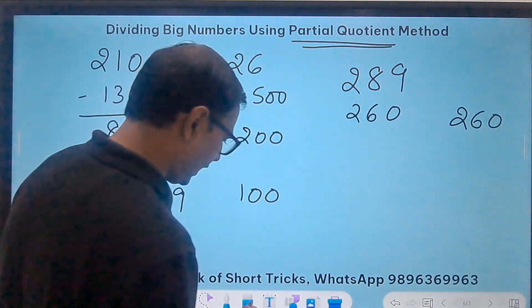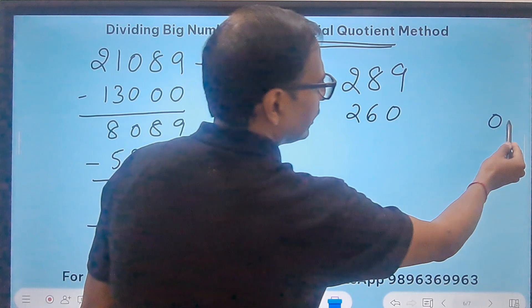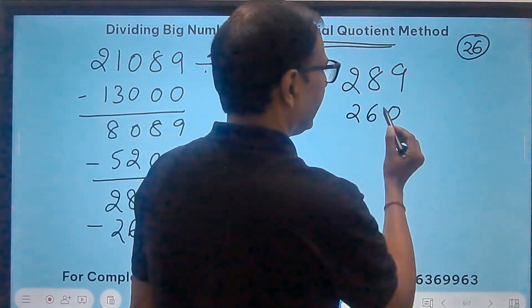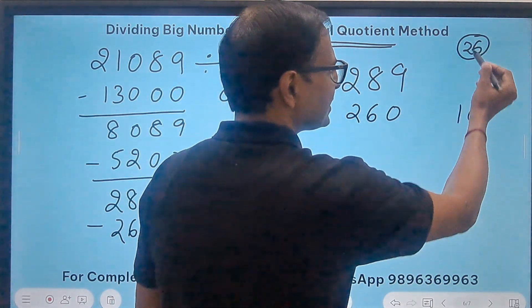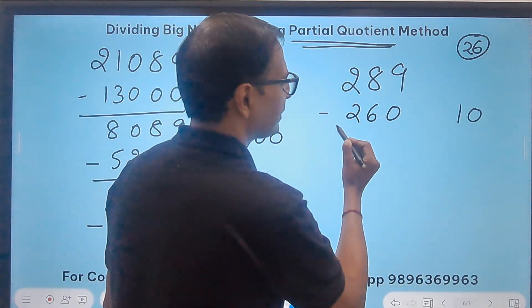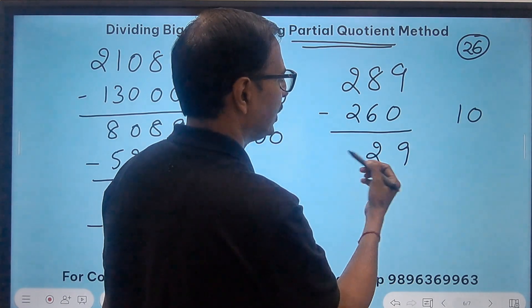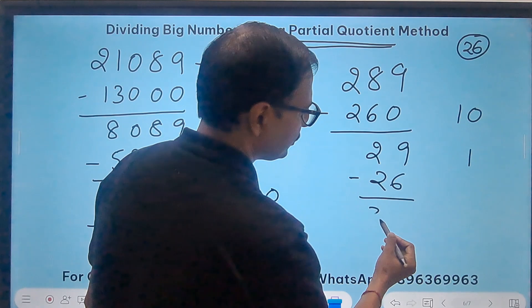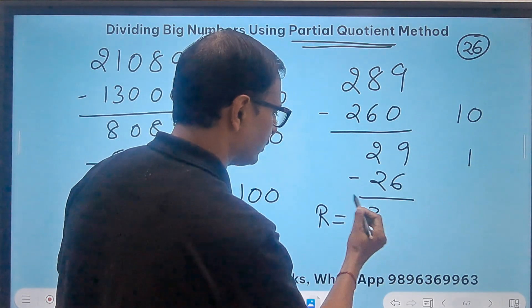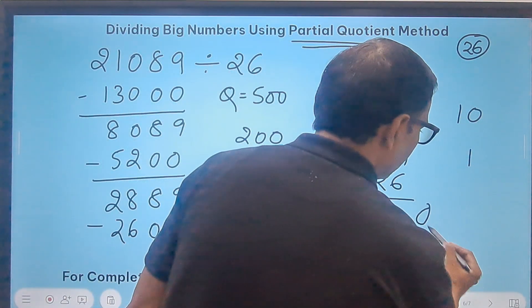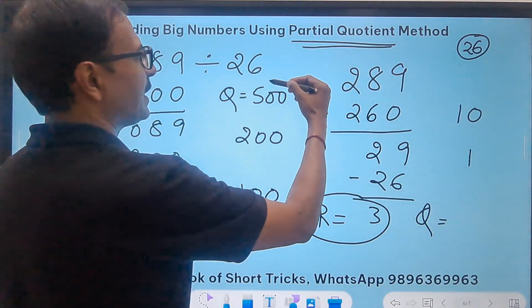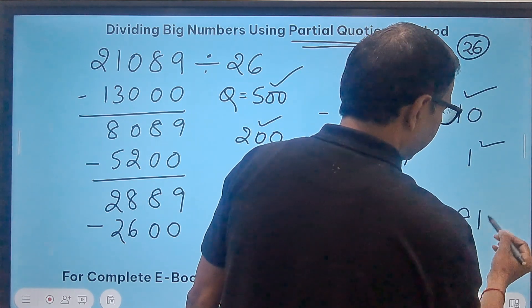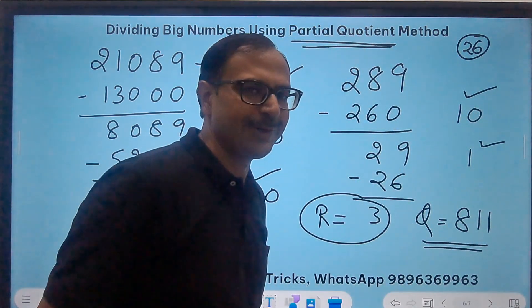Another portion: 26 and a zero, so 26 times 10 is 260. Subtract and get 29. Finally, 1 times 26 is 26, so I get a 3 remainder. The final quotient will be just add these partial quotients: 500, 700, 800, 810, 811. So 811 is the quotient with remainder 3.